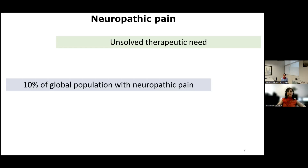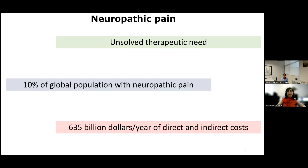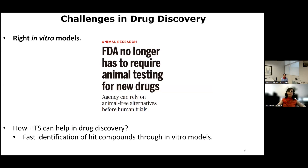The importance of neuropathic pain is also underscored by the high number of people suffering from it around the world. About 10% of the global population is affected, and the associated costs are huge, estimated at more than $600 billion a year. For those reasons, there is a critical need for the development of novel therapies for neuropathic pain.